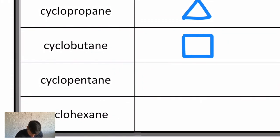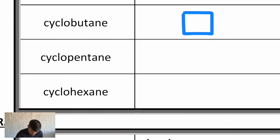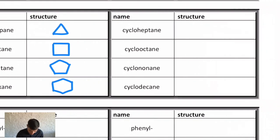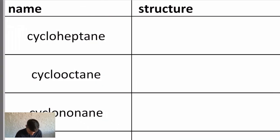Cyclopentane would be a pentagon. Cyclohexane would be a hexagon.